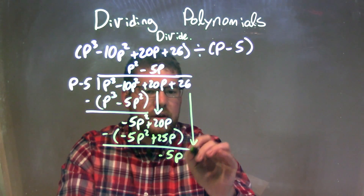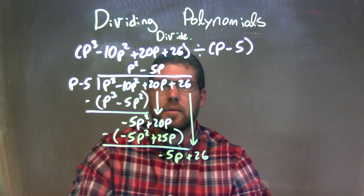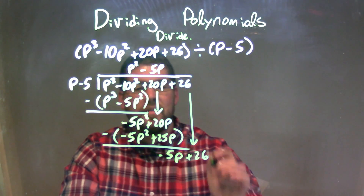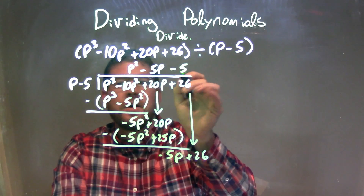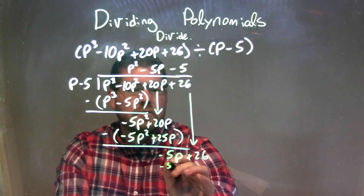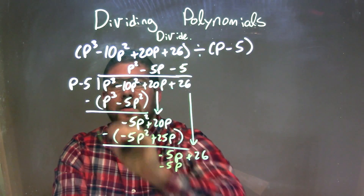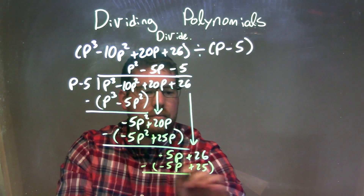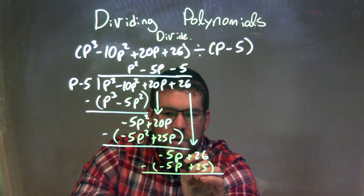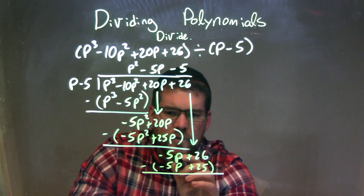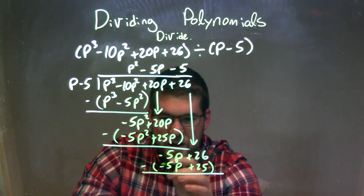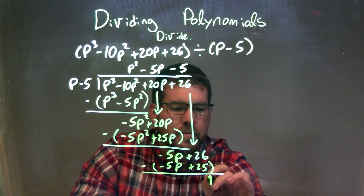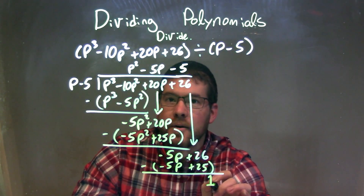Let's bring down the 26. We're going to ask the same question again: what times p gives me minus 5p? And this one here is just minus 5. Minus 5 times p is minus 5p, and minus 5 times minus 5 is plus 25. We subtract the two, top and the bottom. Minus 5p cancels — minus 5p minus minus 5p is zero. 26 minus 25 is just 1. So our remainder is just 1.